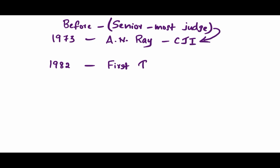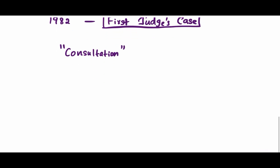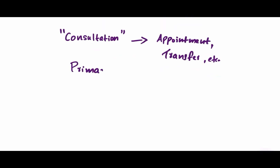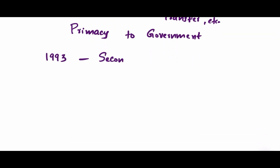Therefore in 1982, a petition was filed in the Supreme Court, known as the S.P. Gupta case or the First Judges' Case. During the proceedings, the Supreme Court discussed whether the word 'consultation' means 'concurrence' — that is, whether the President is bound to make a decision based on consultation with the Supreme Court. The Court overruled this, saying the President is not bound. This ruling gave the government primacy over the judiciary for judicial appointments for 12 years, up to 1993.